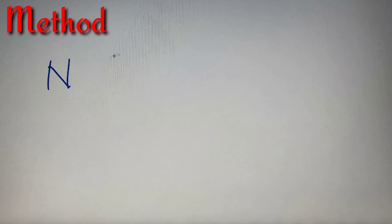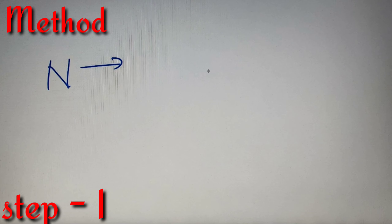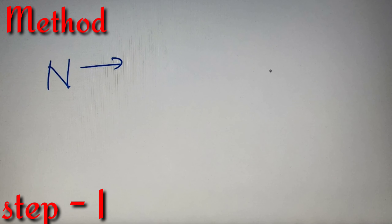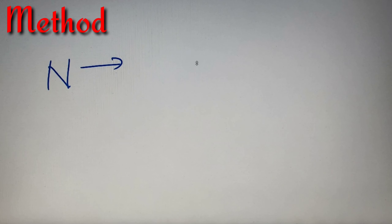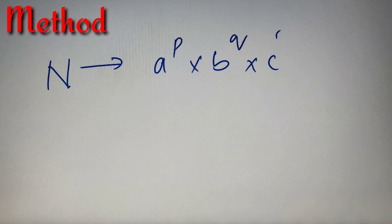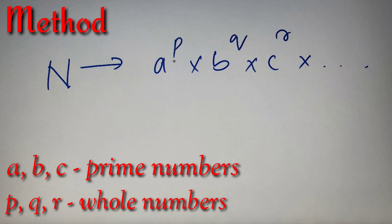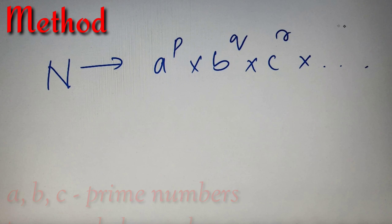If we are given a number n, we calculate the number of perfect square factors in two simple steps. In the first step, we prime factorize the number. Prime factorization is simply the representation of a number in terms of its prime factors raised to arbitrary powers. So n can be written as a^p × b^q × c^r and so on, where a, b, and c are prime numbers and p, q, and r are arbitrary whole numbers.